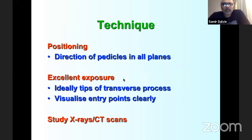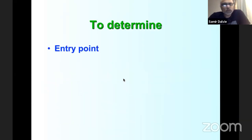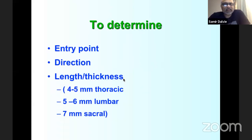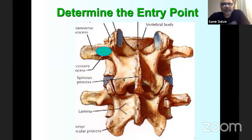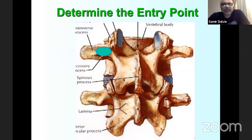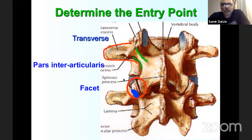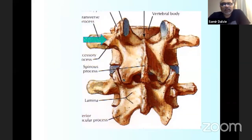Entry points must be clearly visualized. Study pre-op X-rays and CT scans carefully for pedicle anomalies, thin pedicles, or abnormal directions. The entry point can be identified by three landmarks: the mammillary process (when present), the facet joint lateral border, the base of the transverse process midpoint, and the pars interarticularis. These landmarks converge at the correct entry point, which is the junction of the lateral border of the facet joint, midpoint of the transverse process base, and the pars.